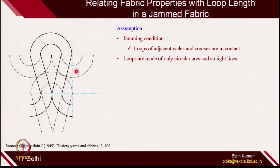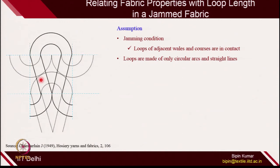Chamberlain assumed that the fabric loops are in jammed condition. Jammed condition means the loops of adjacent wales are actually touching with each other. You can see the sinker loop is touching with the other sinker loop in the series. Similarly, the head of the old loop is touching with the feet of the new loop. This is the maximum shrinkage possibility — you cannot expect the fabric to shrink even more, because the yarn cannot overlap with the sinker region. So this is the perfect jamming condition, where loops of adjacent wales and courses are in perfect contact.